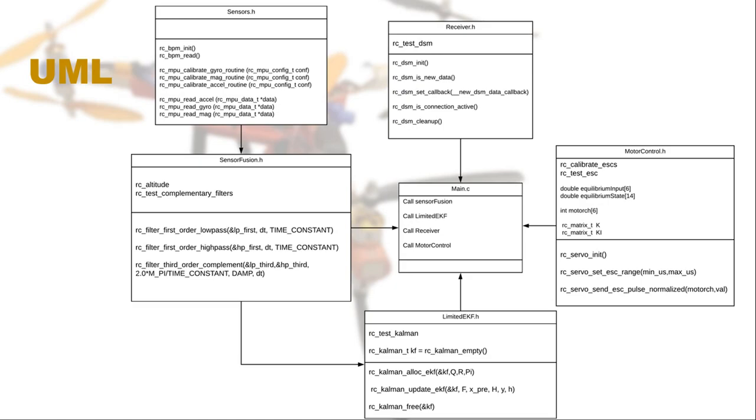The presented UML diagram consists of five distinct function groups, which present functions extending from the robot control library to implement the proposed control system.